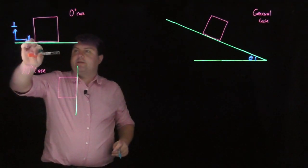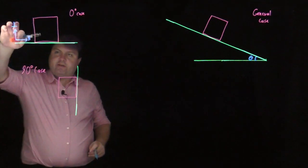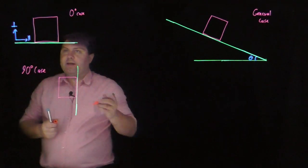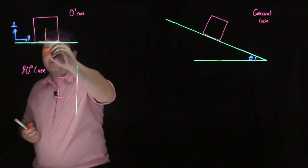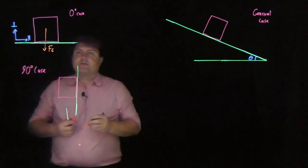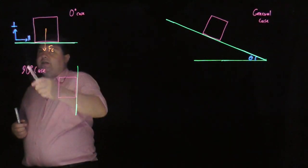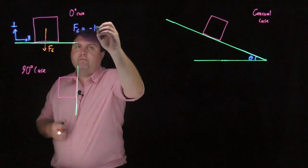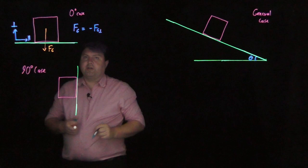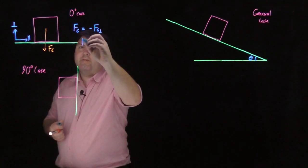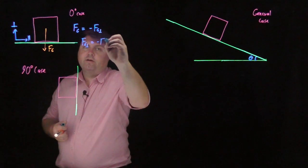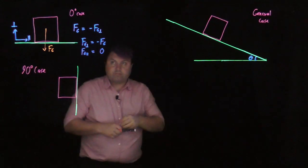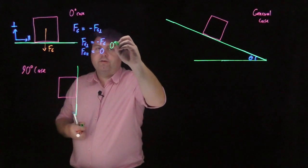Does it matter whether we put parallel in this direction or that direction? Not really. For perpendicular, we usually like to go in the direction that things are happening. If we look at what gravity is doing — the force of gravity is going straight down — we can say FG is equal to negative FG perpendicular. So FG perpendicular is negative FG, and FG parallel is zero. That would be for the zero-degree case.